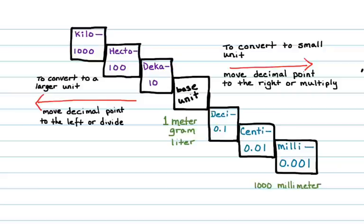If I go up the stairs to kilo, I'm converting to a larger unit. I move the decimal point to the left three places, and I get 0.001 kilometers equals one meter. Or, I've divided one by a thousand.